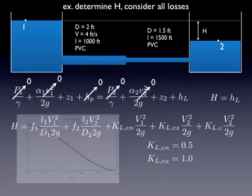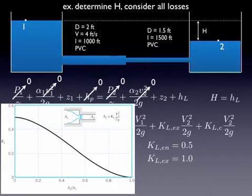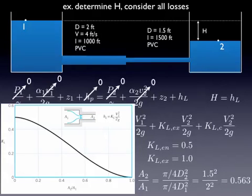For the contraction, we need to know the relative areas. So a2 over a1 is 0.563, and that gives us a contraction coefficient of around 0.2.